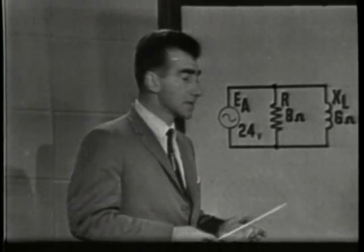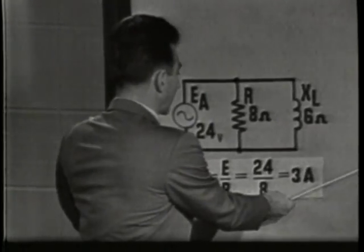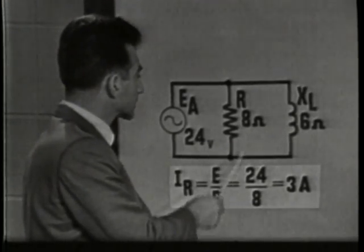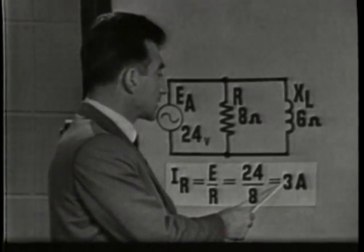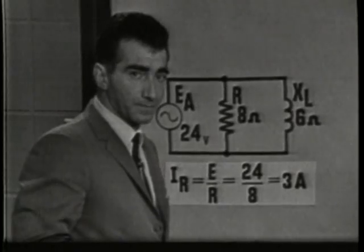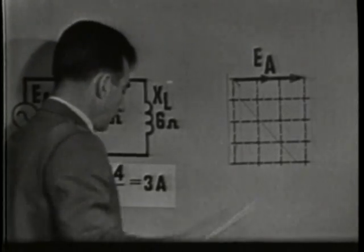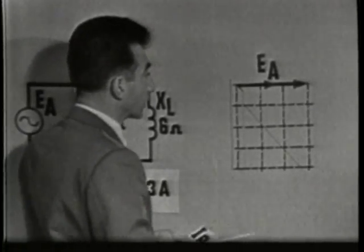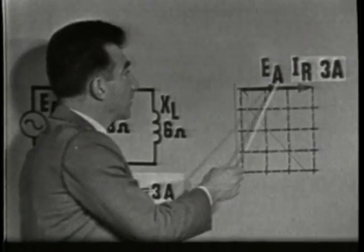We can find the branch currents by simply applying Ohm's Law. For example, in this circuit, to find the current value in the resistive leg, we apply Ohm's Law: IR is equal to E over R, or 24 over 8. IR is equal to 3 amperes. If we plot IR on our vector graph, we must show it in phase with EA, because there is no phase shift caused by the resistor. IR is 3 amperes in phase with EA.